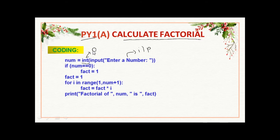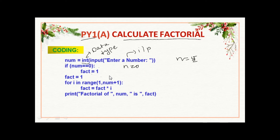Here, int means data type. Suppose we are going to get an input value: n is equal to 5, so 5 is an integer data type. If num equal to equal to 0 — suppose we are going to give n value equal to 0 — we check the condition: if num equals 0.